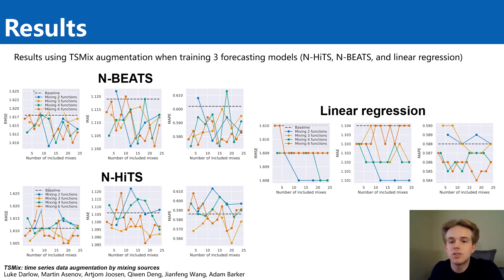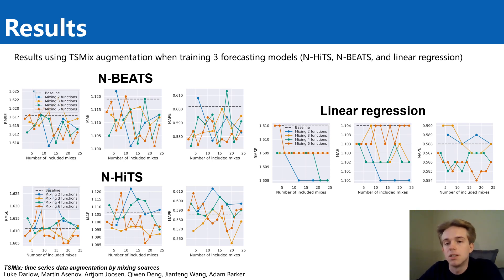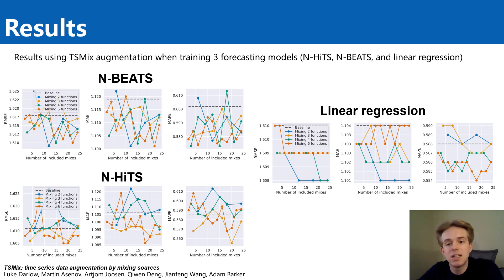These figures show the RMSE, MAE, and MAPE results for the baseline, that is, no mixing, as well as various mix combinations on the x-axis. TSMix results on N-BEATS show superior performance for almost all mix combinations, with a tendency for better RMSE when including more mixes. N-HiTS benefits less from TSMix, but still shows superior performance to the baseline for many mix combinations.